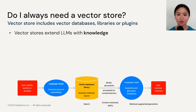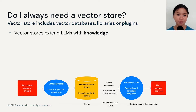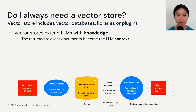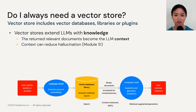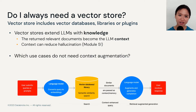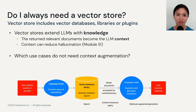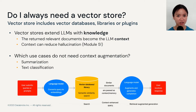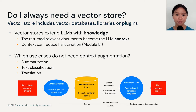Vector stores extend LLMs with knowledge. You can provide relevant vector lookup and therefore extend the context. This can be really helpful for factual recall and can also help with hallucination, which is an LLM problem we'll dive into in module 5. Generally speaking, there are use cases that probably do not need context augmentation — for example, summarization, text classification, including sentiment analysis, and translation. For these use cases, you should feel safe enough to not use a vector store.